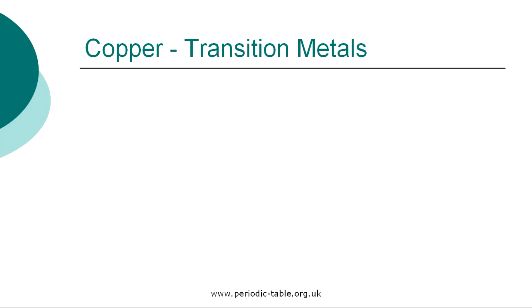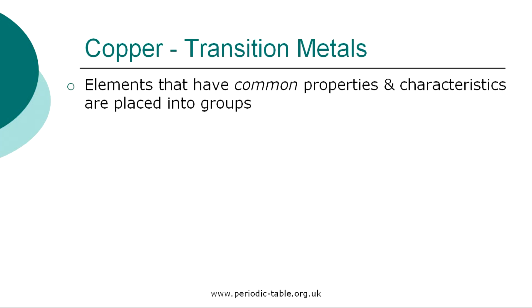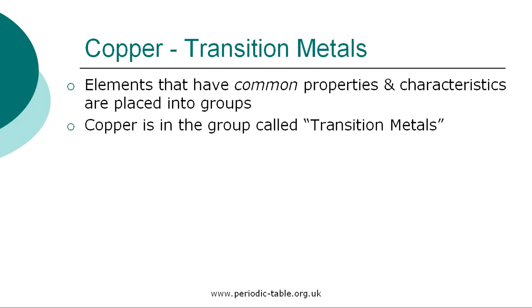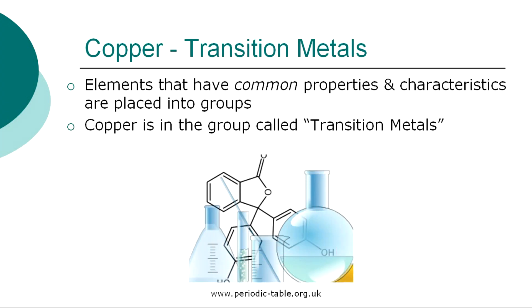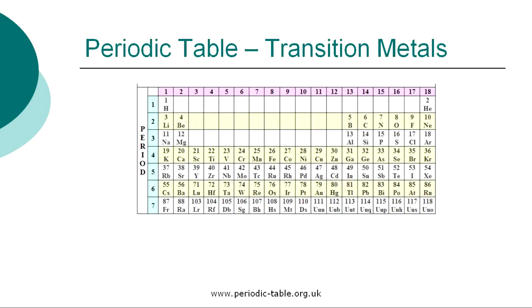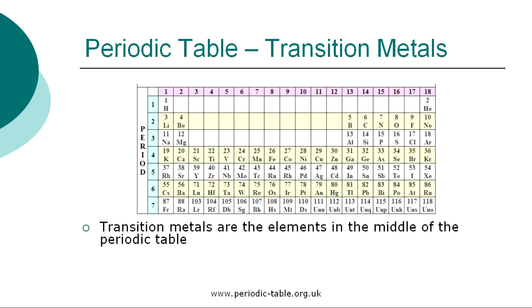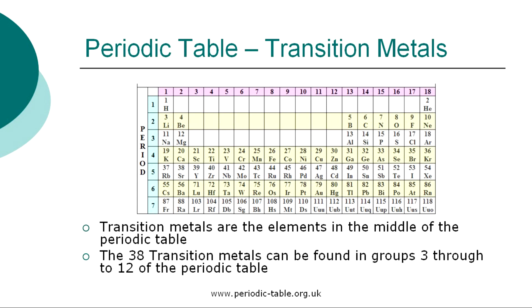Once the properties of an individual element have been identified, it is placed into a group of elements which have common properties and characteristics. Copper is in the group called the transition metals. The 38 elements classified as transition metals are found in the middle of the periodic table in groups 3 through 12.